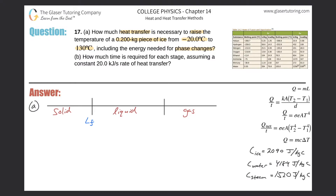Between the liquid and gas phase is going to be the latent heat of vaporization. For water, the freezing temperature is zero degrees Celsius, so I'll mark that here, and it boils at 100 degrees Celsius, so I'll write that where it converts from liquid to gas.